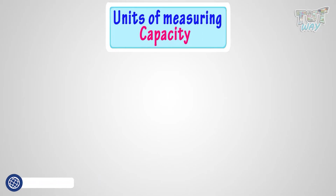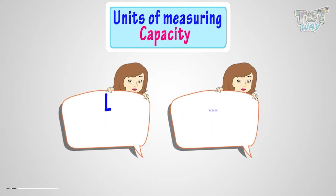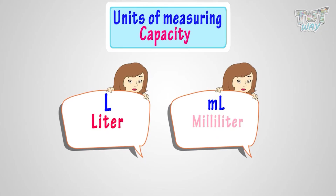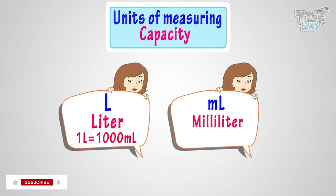Capacity is measured in L or mL, where L is the symbol for liter and mL is the symbol for milliliter. One liter equals 1,000 milliliters.